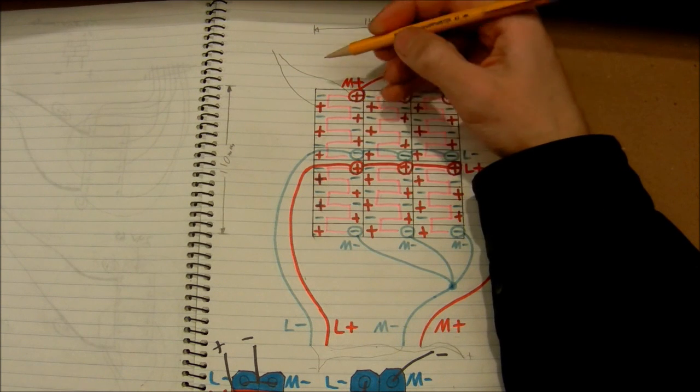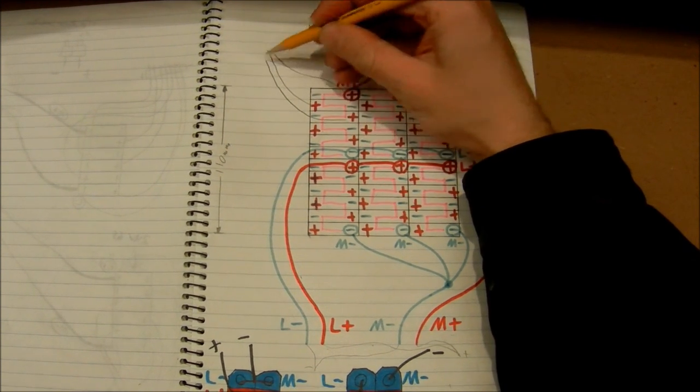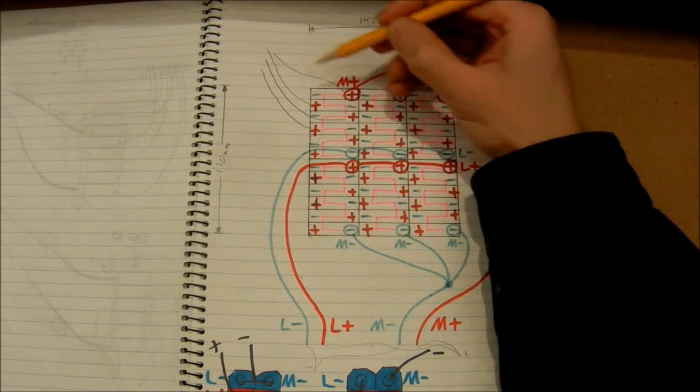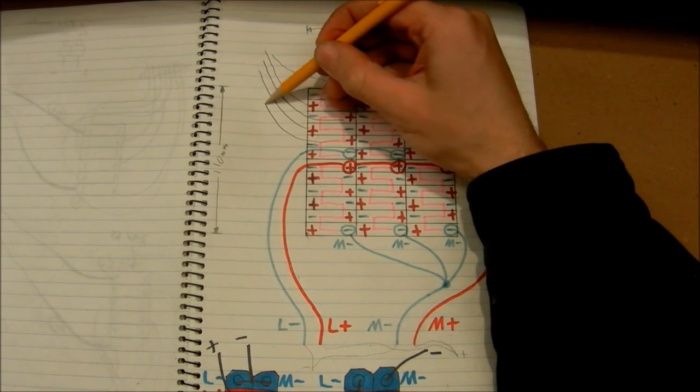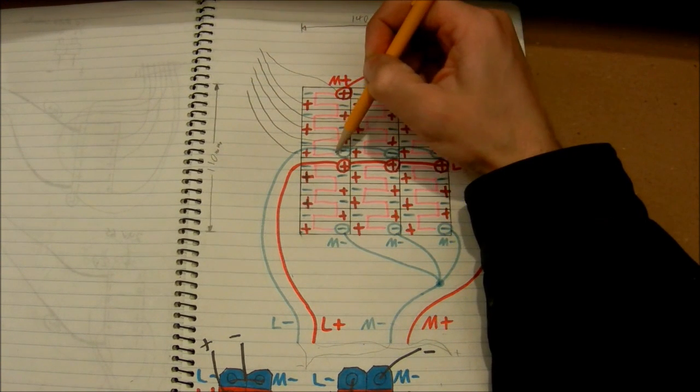So that'll give you the voltage of that cell. Wire coming off this positive will give you the voltage of this third cell. Wire off this positive, and then finally the negative to give you the voltage of the last cell.